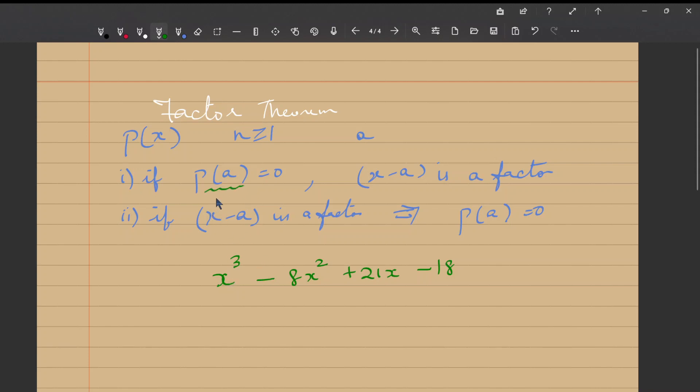Let us substitute for x, 1. So if P(1) is equal to 0, then we can conclude that x minus 1 is a factor and then we can divide this polynomial by x minus 1. So I am going to substitute in x, 1: 1³ is 1 minus 8 plus 21 into 1 minus 18. See, just the look of it, I can say if I add the negatives 18 and 8 and if I add the positives, they are not going to be equal to 0. So x minus 1 is not going to be a factor.